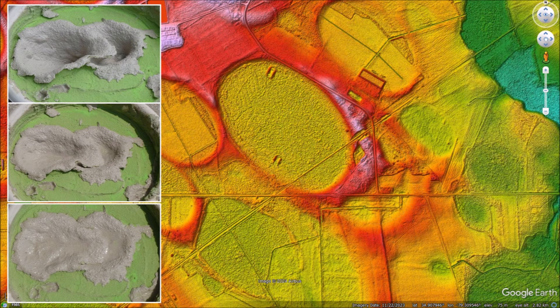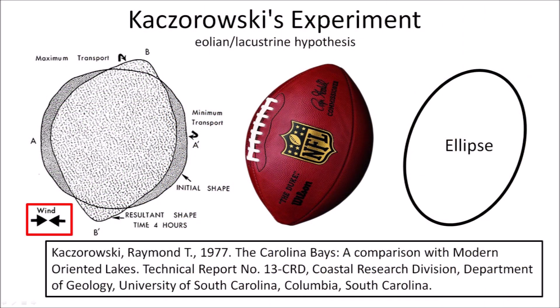Only impacts can create overlapping structures like these. The hypothesis that the Carolina Bays were created by uniformitarian wind and water mechanisms, or that the bays originated as thermokarst lakes, cannot explain the features observed in the LiDAR images. The Wind and Water Hypothesis, also called the Aeolian-Lacustrine Hypothesis, relies on an experiment by Raymond Kaczorowski in a 1977 report that was never published in a peer-reviewed publication, but which has been cited many times by opponents of the impact origin of the Carolina Bays.